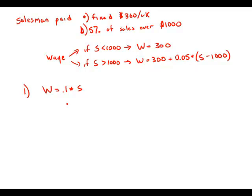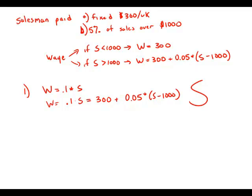Case two tells us that the wage, which we know here is 0.1 times S, would equal 300 plus 0.05 times (S minus 1,000). So here we have an equation that we could solve for S, and if we could solve for S, then we could solve for the wage. We won't actually go through the solution — that's not required in data sufficiency. All that's required is knowing that yes, at this point we could solve. So statement number one is sufficient to answer the question.